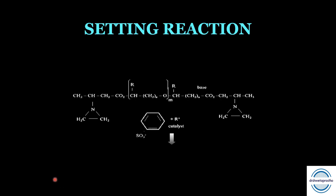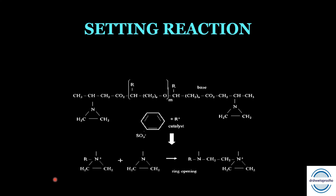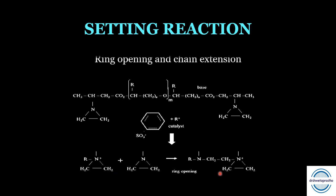Setting reaction of polyether: the amine-terminated prepolymer in the presence of aromatic sulfonate (cross-linking agent) undergoes ring opening and chain extension, forming cross-linked polyether rubber. The cross-linking offsets some of the shrinkage. It is an exothermic reaction affected by temperature.